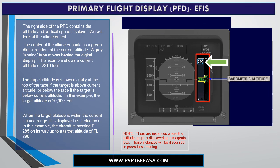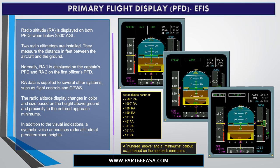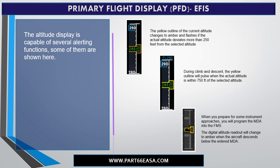Note, there are instances where the altitude target is displayed as a magenta box; those instances will be discussed in procedures training. Radio altitude is displayed on both PFDs when below 2,500 feet AGL. Two radio altimeters are installed; they measure the distance in feet between the aircraft and the ground. Normally, RA1 is displayed on the captain's PFD and RA2 on the first officer's PFD. RA data is supplied to several other systems such as flight controls and GPWS. The radio altitude display changes in color and size based on height above ground and proximity to entered approach minimums. In addition, a synthetic voice announces radio altitude at predetermined heights.